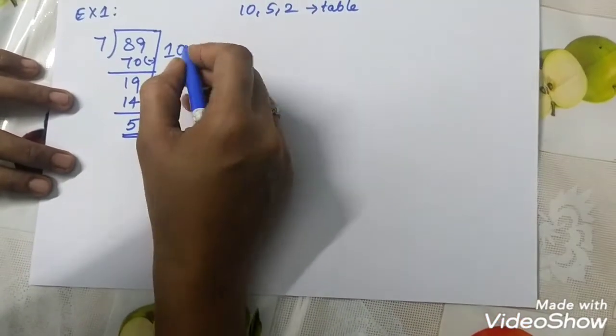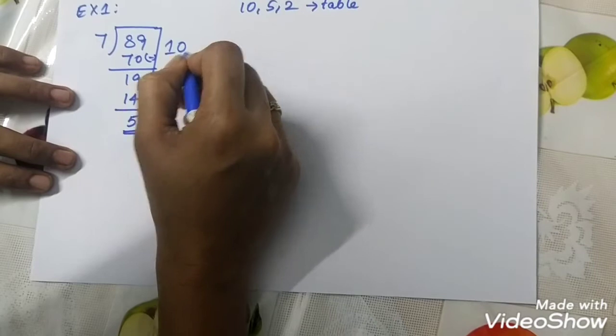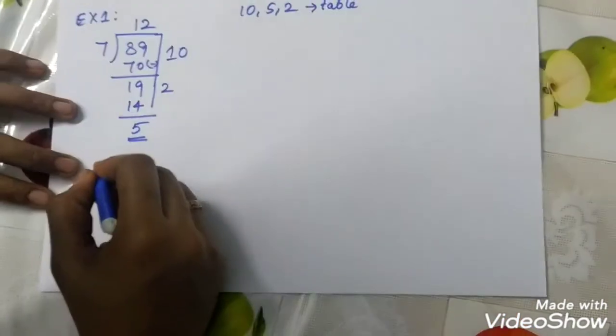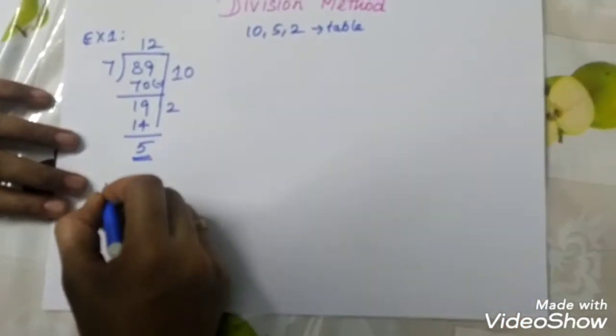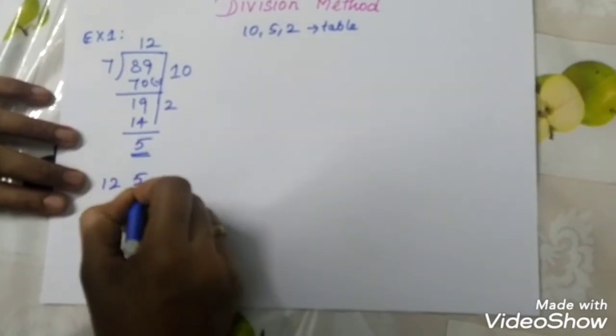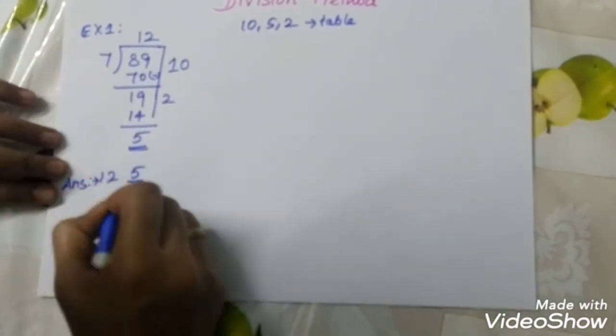So, how can you get the answer? 10 plus 2, 12. So, that is answer 12. So, how can you write 12, 5 divided by 7. This is first answer.